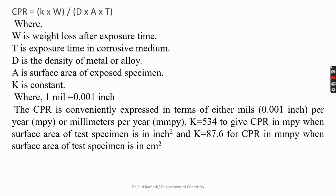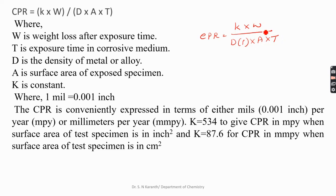We express the corrosion penetration rate by the formula: CPR = K × W / (ρ × A × T). Here, K is a constant that depends upon the medium, W is the weight loss after exposure time, T is the exposure time in the corrosion medium, D (rho) is the density, and A is the surface area of the exposed portion.